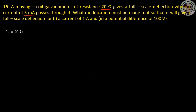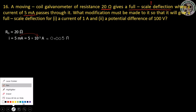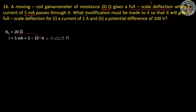The full-scale deflection current is 5 mA. If you want to get a voltage range, you can use 50 ohms. The deflection at 0.005 A corresponds to a resistance of 20 ohms. What modification must be made to it?